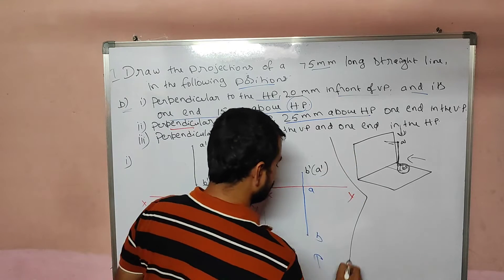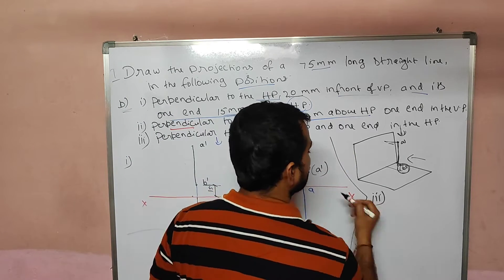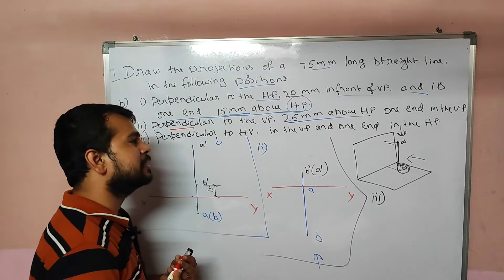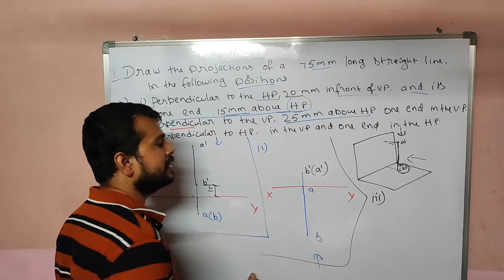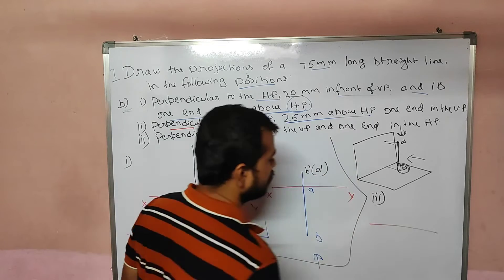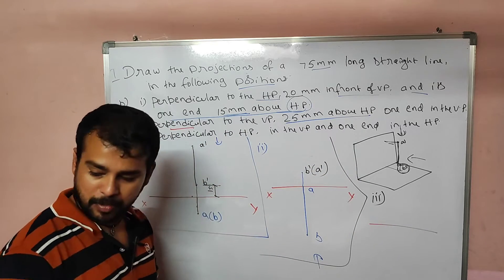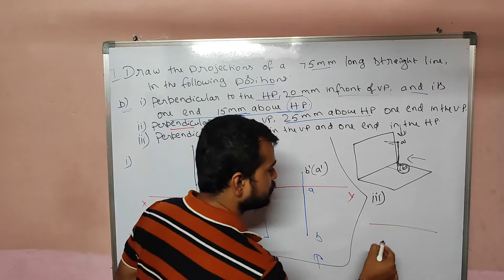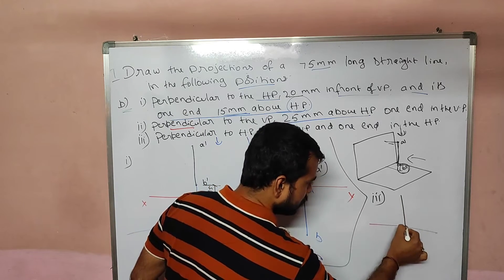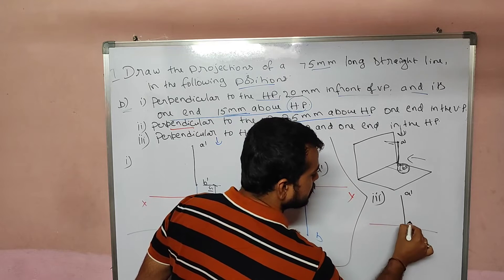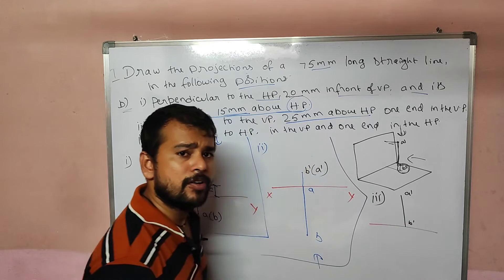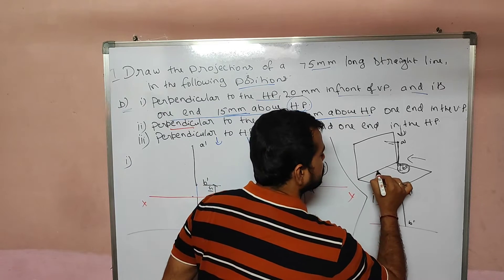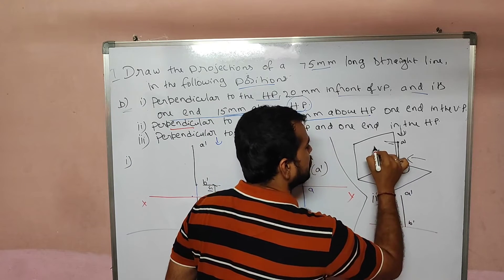Problem number two: perpendicular to HP, one end is in the HP. The perpendicular to HP refers to the front view. This is A prime and this is B prime. This is a working point as well, so we are leaning here. A, B.